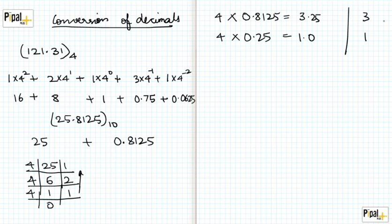So 25 in base 10 is represented by 1, 2, 1 in this order in base 4, and 0.8125 in decimal is represented by 3, 1 in this order. So my answer is 121, and I append the decimal 3, 1 to the end. This becomes my decimal conversion.